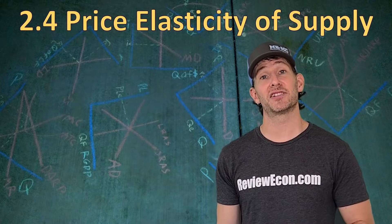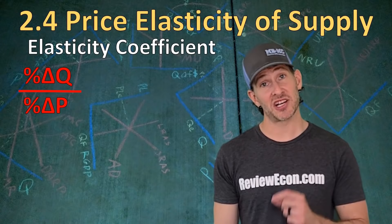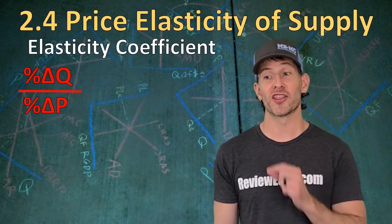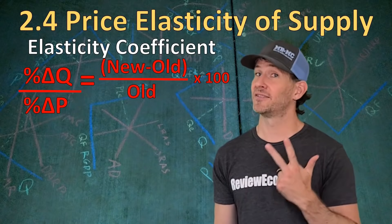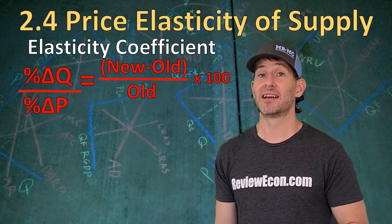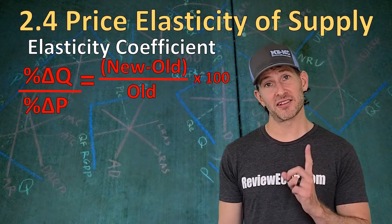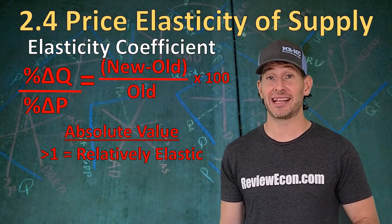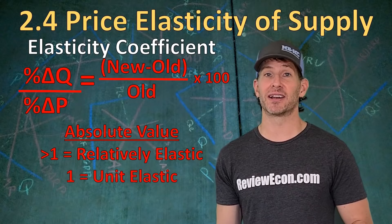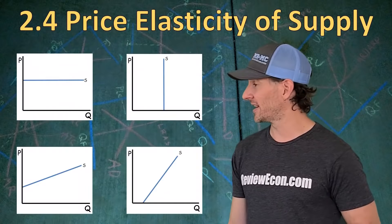Now let's look at the price elasticity of supply. The coefficient calculation is just like for demand: percentage change in quantity divided by percentage change in price. The preferred method for calculating percentage change is new minus old, divided by old, times 100. Supply curves will always have a positive coefficient because there's a direct relationship between price and quantity. If the absolute value is greater than one, it's relatively elastic supply; equal to one is unit elastic; less than one is relatively inelastic supply.